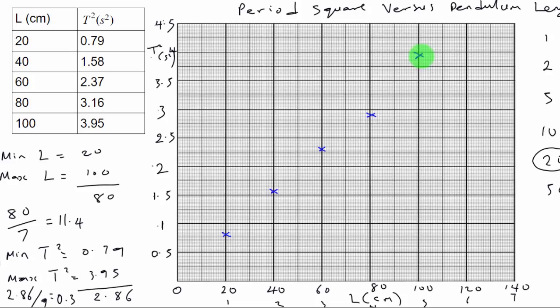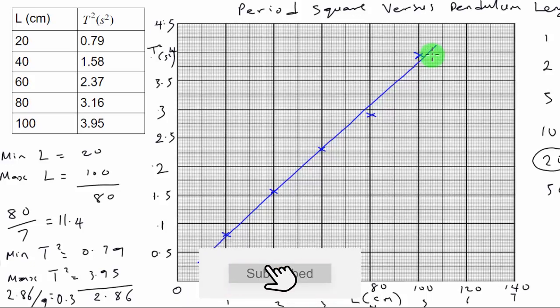Now that we've plotted all the points on the graph, the next step is to draw the line of best fit. A line of best fit is a straight line that touches all the points or is very close to all the points. In most cases it won't touch every point, but it should be as close as possible to all of them. You are expected to use a ruler to draw your line of best fit, making sure it stays outside the smallest points but touches as many points as possible.